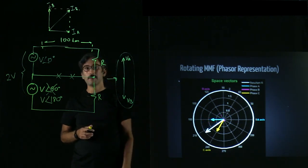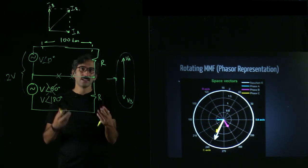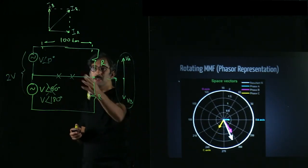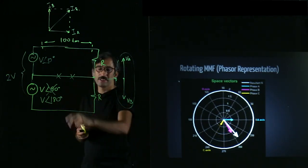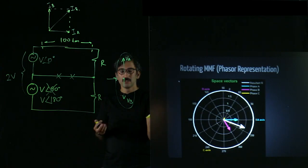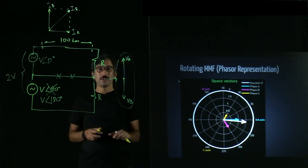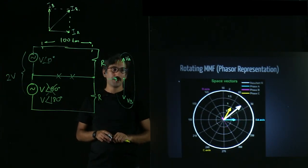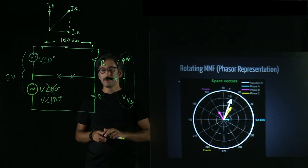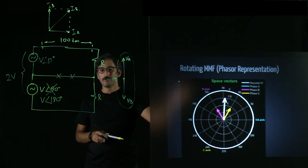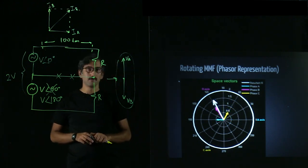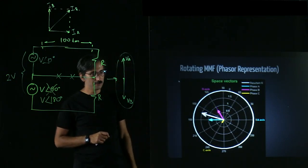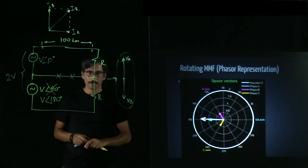So the conclusion is: either you have a two-phase system that can generate a rotating MMF but is inefficient in terms of wire length, or a 180-degree two-phase system that cannot generate a rotating MMF at all. Three-phase solves both problems simultaneously — no neutral line is needed, less wire is used, and three is the minimum number of phases with these properties. That is why we use a three-phase system all around the world.